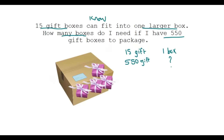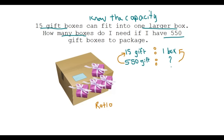This is the second instance — I already know the capacity. This is actually the easier one. If you look at the information, it looks like a ratio or a fraction. For ratio-type questions, an easy approach is to see how you go from one side to the other. I start with five hundred and fifty and divide by fifteen to find how I get to one box. Five hundred and fifty divided by fifteen gives thirty-six point six seven.